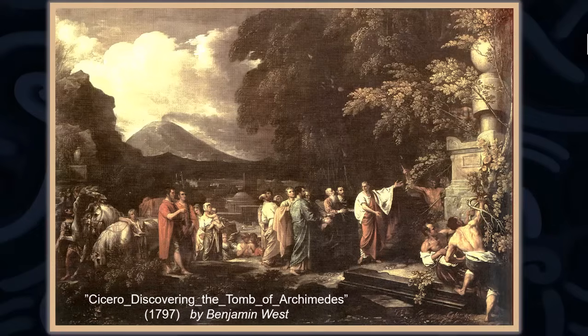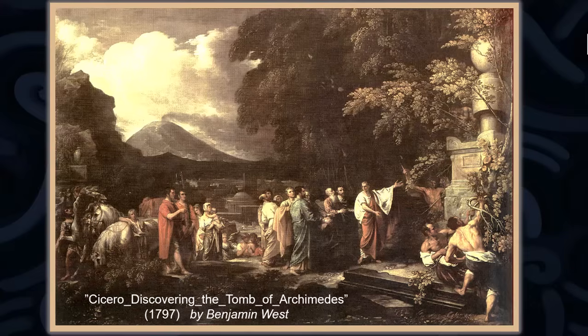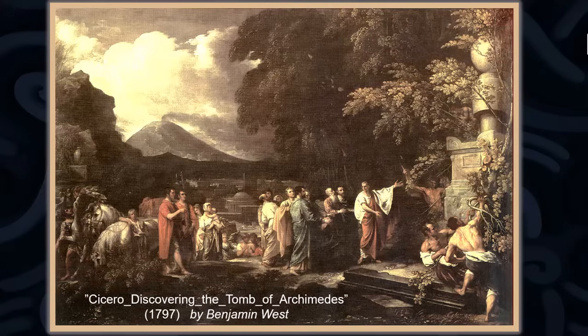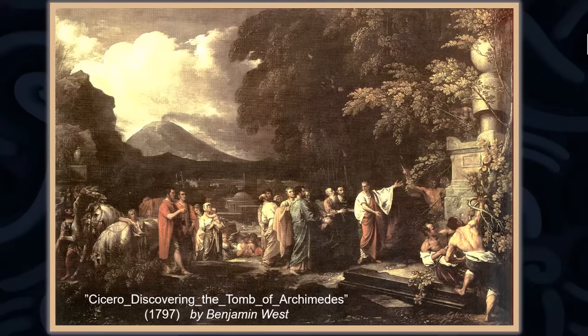Now this is a painting from 1797 by Benjamin West, called Cicero discovering the tomb of Archimedes. Marcus Tullius Cicero was a Roman senator, a consul, and most notably a great orator and writer. In Book 5 of his Tusculan Disputations, Cicero says that when he was in Sicily, he went looking for and found the tomb of Archimedes. He recognized it by the carving of the sphere and the cylinder.